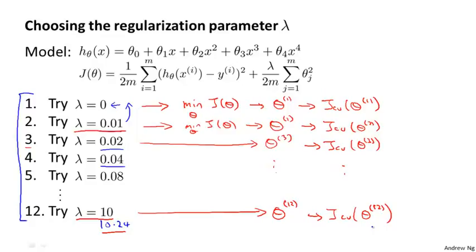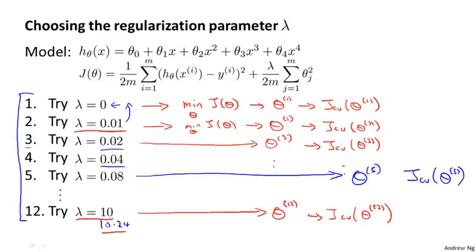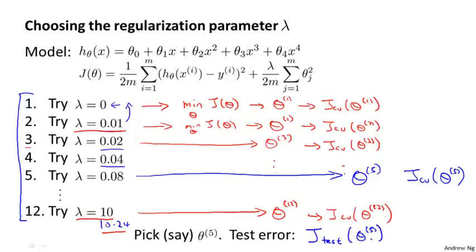Let's say for the sake of this example that I end up picking theta 5, the fifth order polynomial, because that has the lowest cross validation error. Finally, if I want to report the test set error, I take the parameter theta 5 that I've selected and look at how well it does on my test set. I'm saving aside a separate test set to get a better estimate of how well my parameter vector theta will generalize.